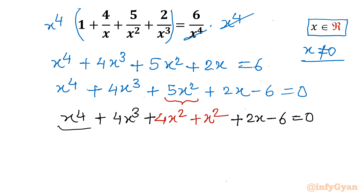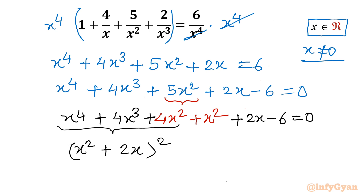From the first three terms, I can write x power 4 plus 4x cubed plus 4x squared as (x squared plus 2x) whole squared. Let's verify: (x squared)² is x power 4, (2x)² is 4x squared, and 2 times x squared times 2x gives 4x cubed. The remaining terms are written as is: x squared plus 2x minus 6 equal to 0.